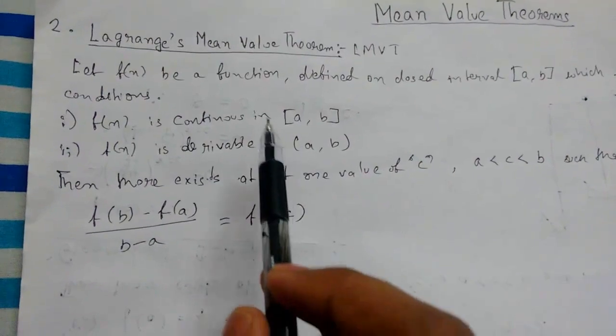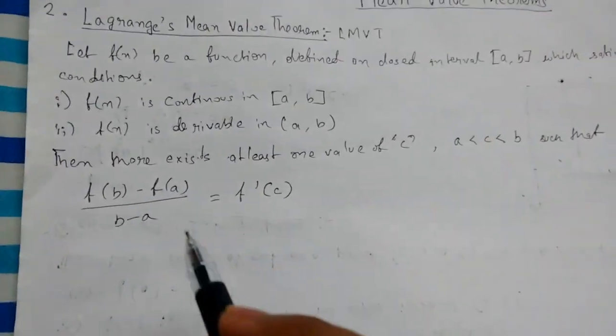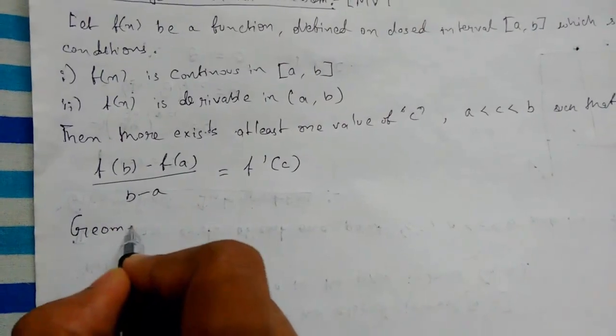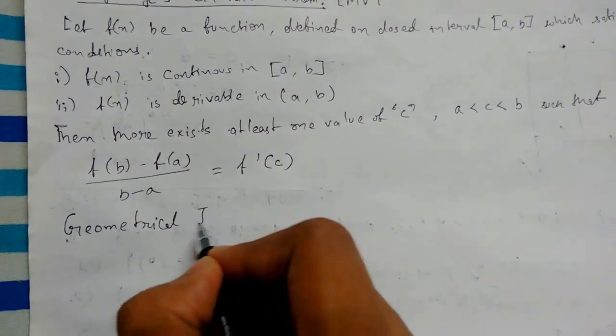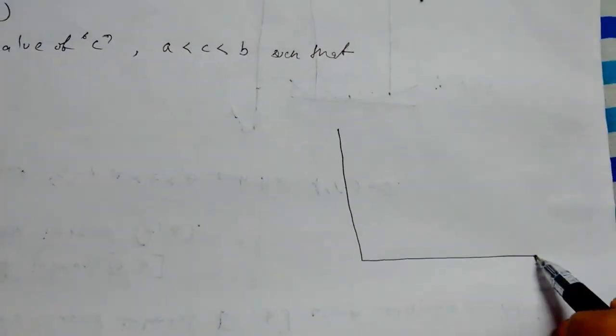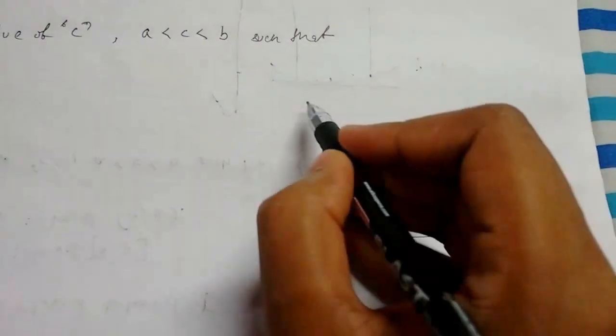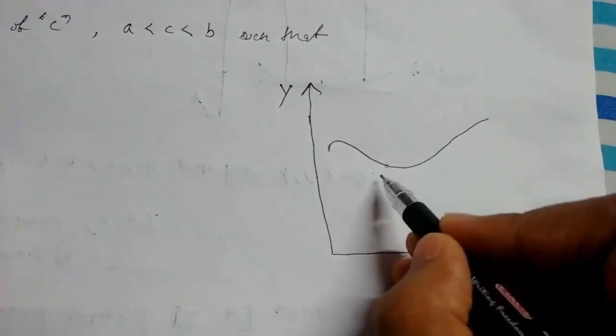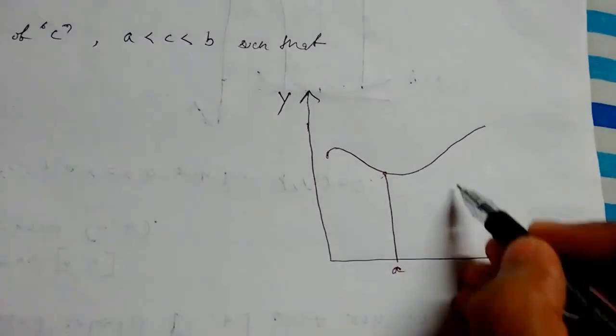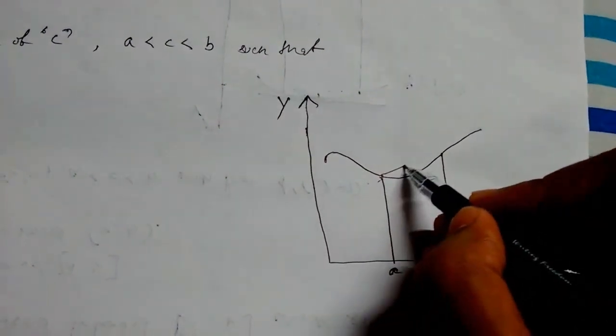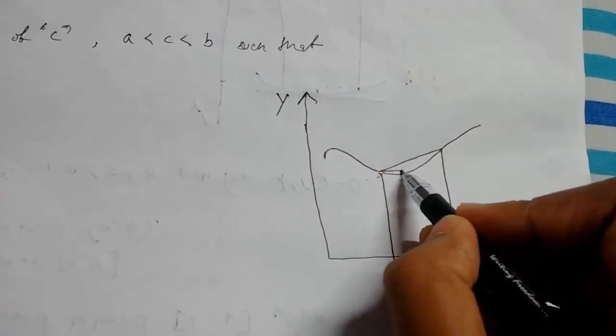which we get when our function satisfies these two conditions. So let us learn this a little more clearly by our geometrical interpretation. So to understand this, let us draw our axis. This is our x-axis, this is our y-axis. So again we take a continuous function. This is our interval a, this is b, and now we will join these two.